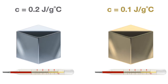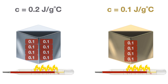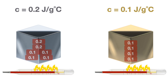To further demonstrate, suppose we have the same 1-gram masses of silver and gold, and we want to heat both up to 4 degrees Celsius. Because silver has a higher specific heat, it would have to absorb twice the amount of energy as gold to heat up by the same number of degrees Celsius. Silver must absorb 0.2 joules of energy before increasing its temperature by 1 degree Celsius, whereas gold only needs to absorb 0.1 joules — twice the energy required for silver to match gold's temperature increase.